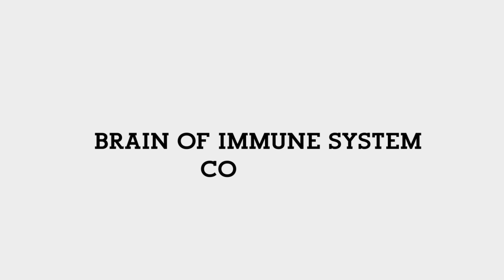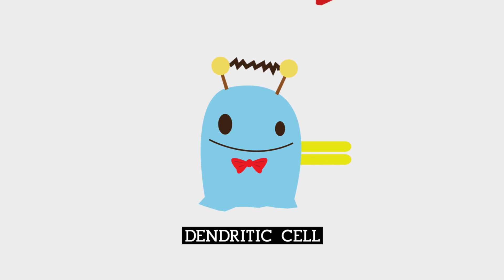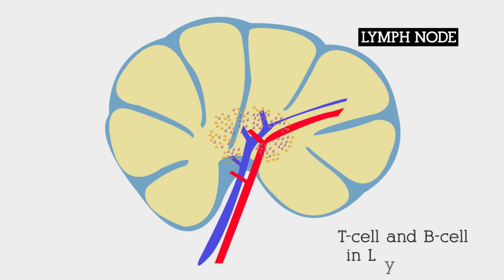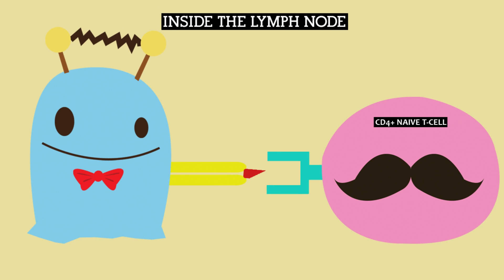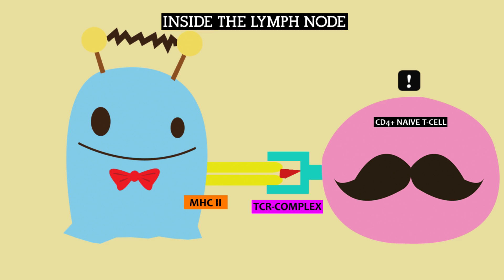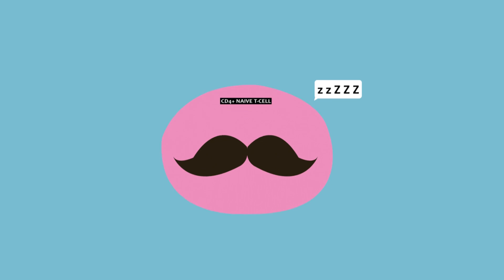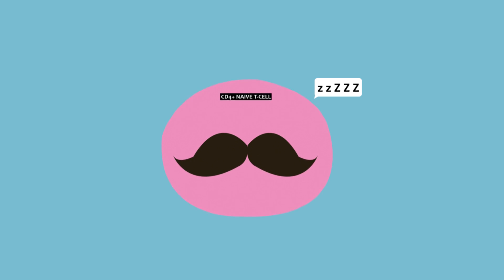The next arm of the immune system comes in — dendritic cells. Dendritic cells take up MTB from the site of infection and migrate to the nearby draining lymph node. They trigger the adaptive immune response by presenting MTB peptides via MHC class II to the T-Helper-1-specific T-cell receptor on naive CD4 T-cells.